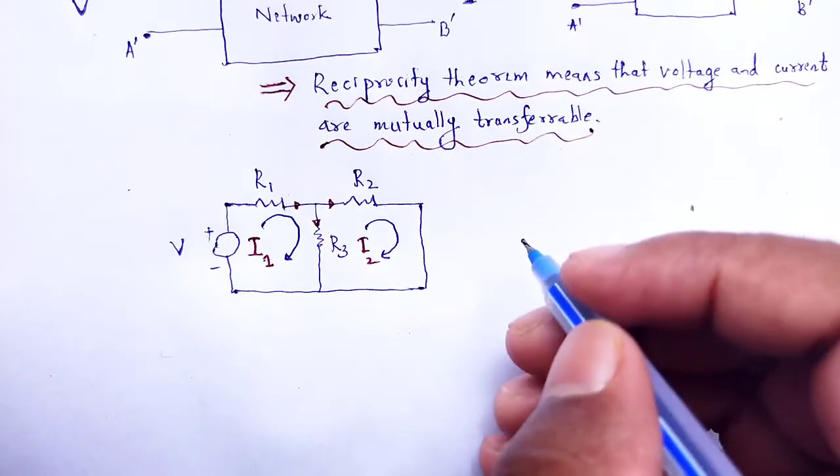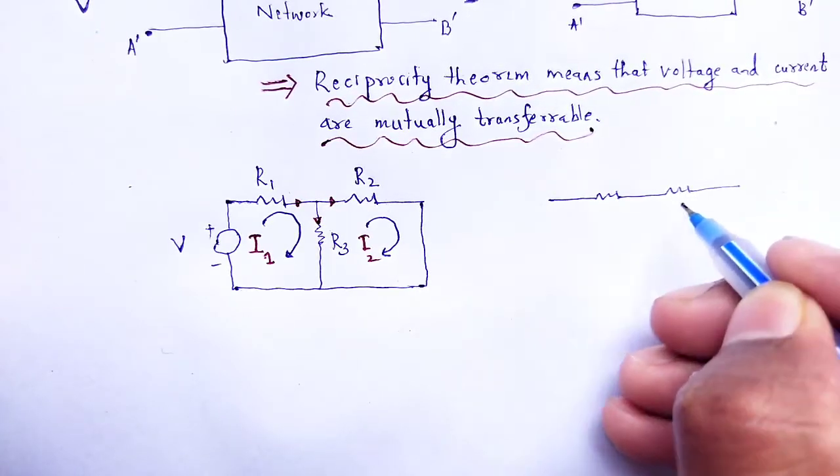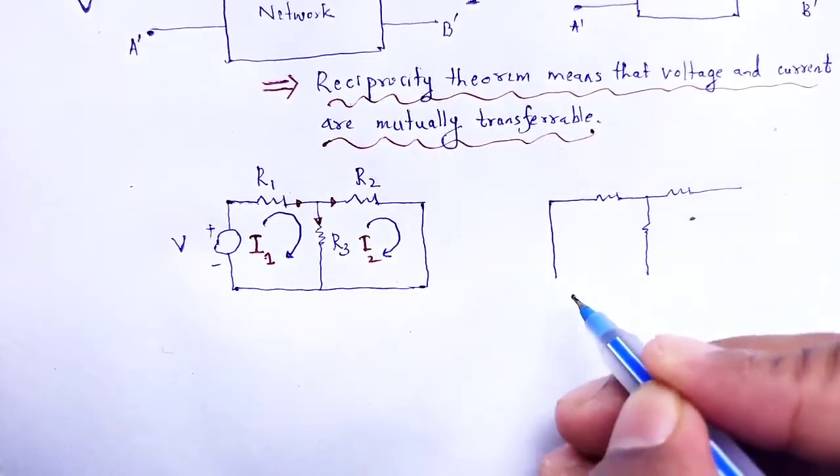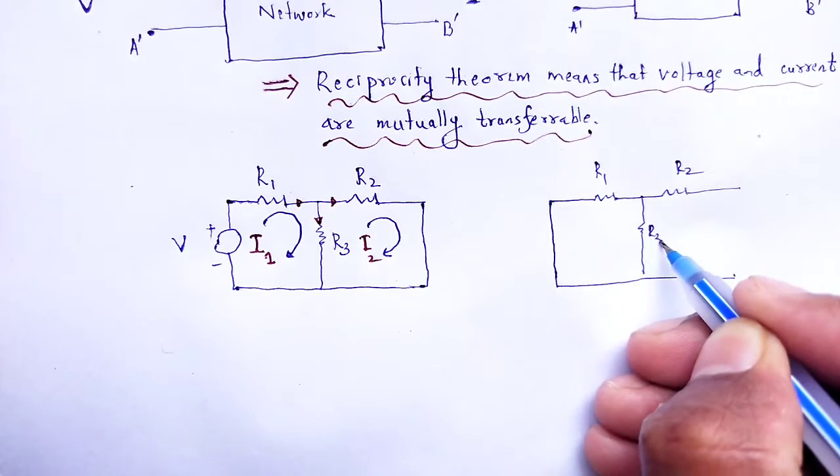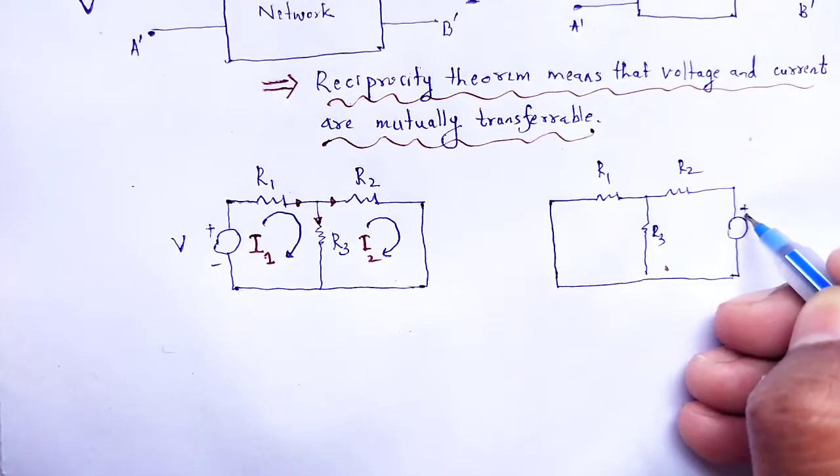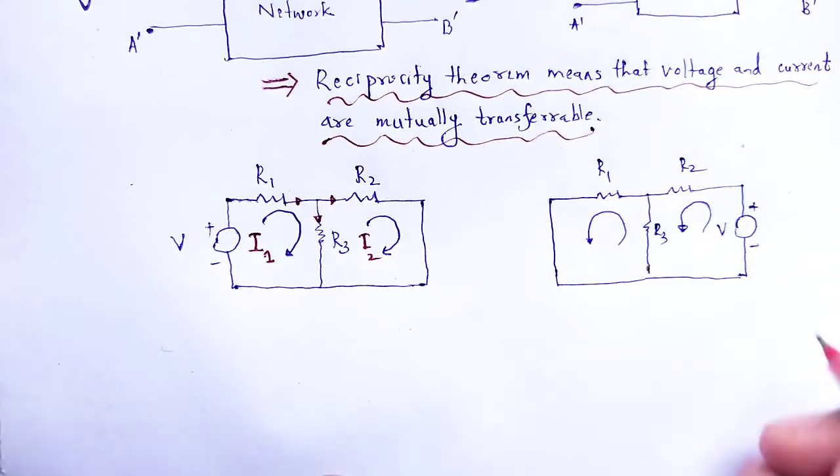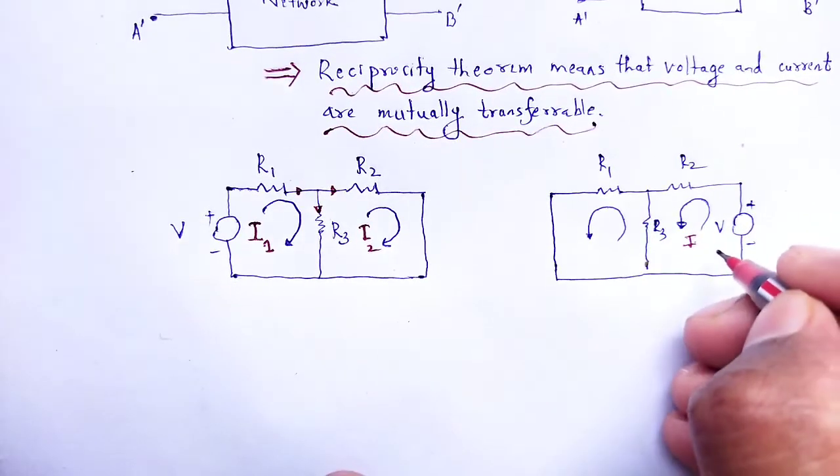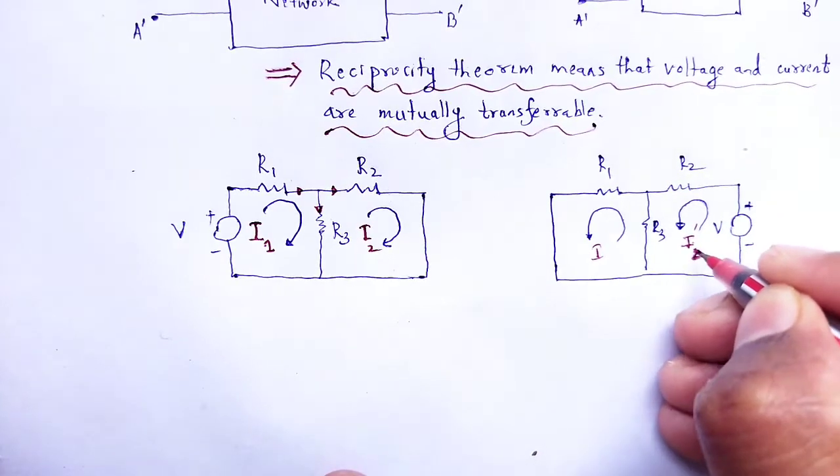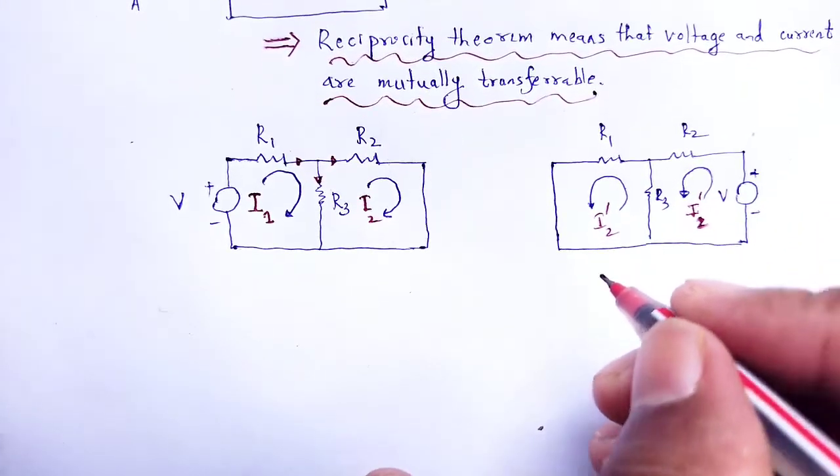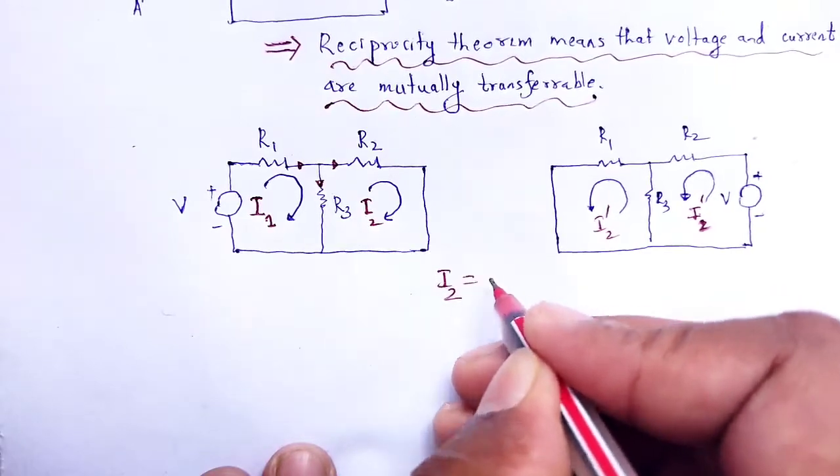Again, sense that potential. So the electrical network R1, R2, R3, here the potential source is given V, current let I2 dash, here let I1 dash, here let I2 dash. According to the reciprocity way, here I2 is equal to I1 dash.